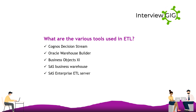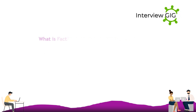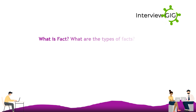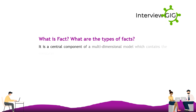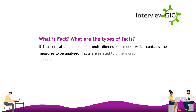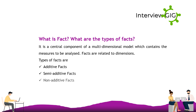A fact is a central component of a multi-dimensional model which contains the measures to be analyzed. Facts are related to dimensions. The types of facts are: additive facts, semi-additive facts, and non-additive facts.